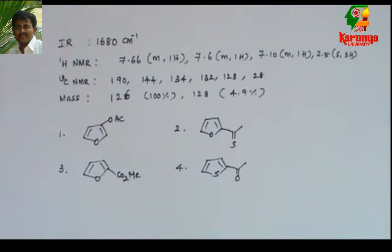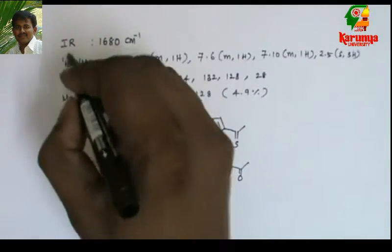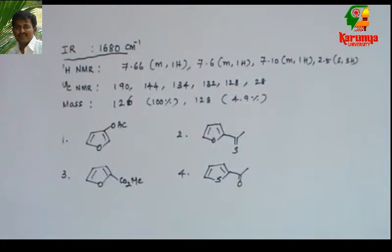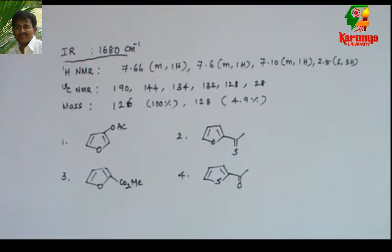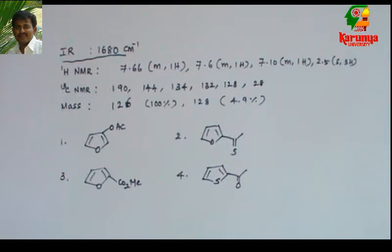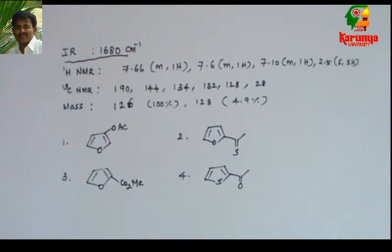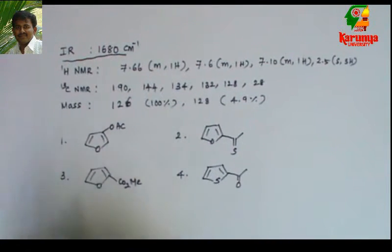It is very simple. Based on this spectral data alone, we can solve this problem. IR is used for identifying the functional group. First, let us see what the functional groups are in this.